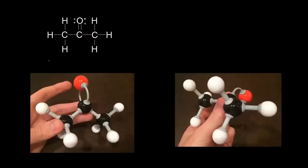On the left is the Lewis dot structure for acetone, and we could turn that into a bond line structure really quickly. Here is the bond line structure for acetone. I could put in lone pairs of electrons on the oxygen, or I could leave them off.